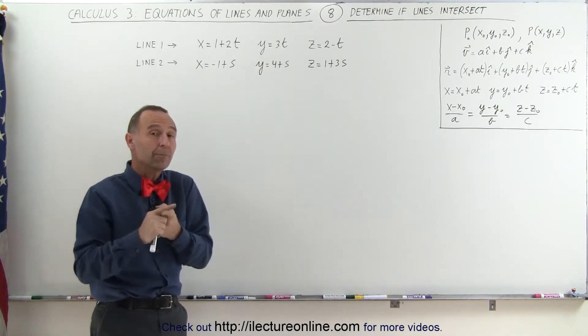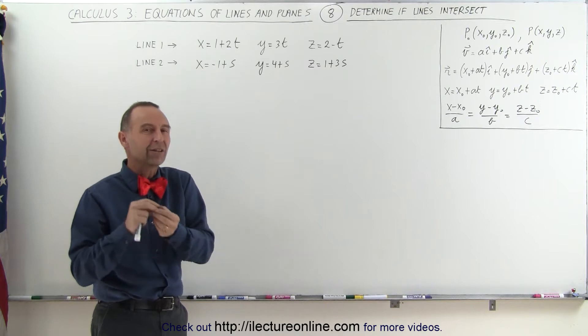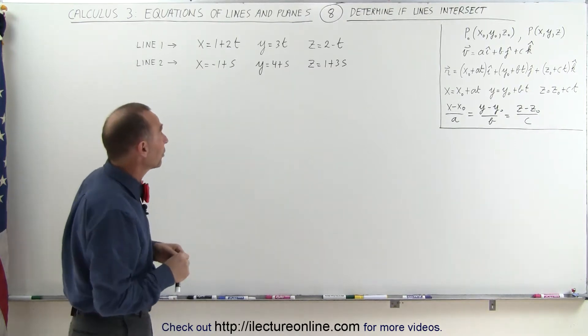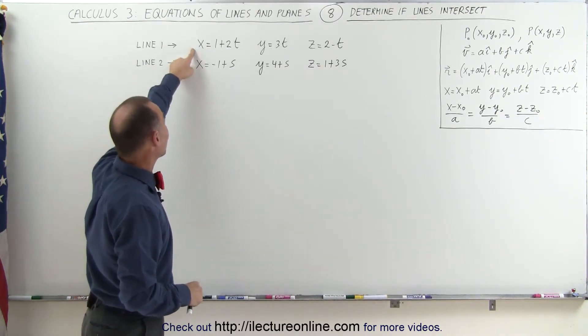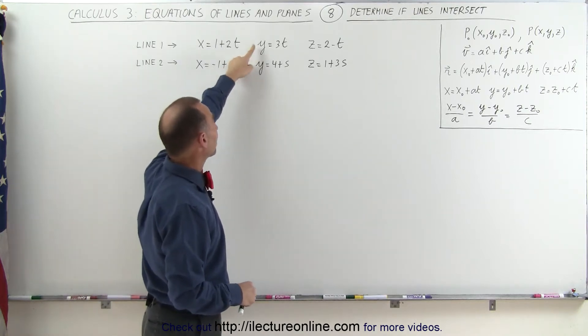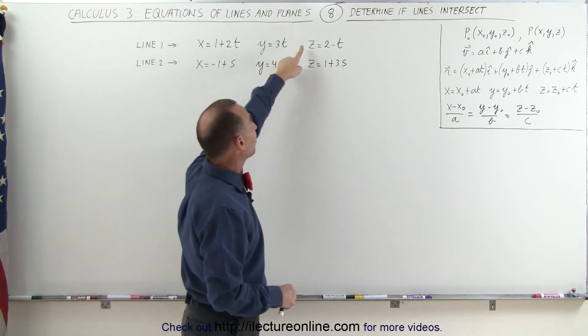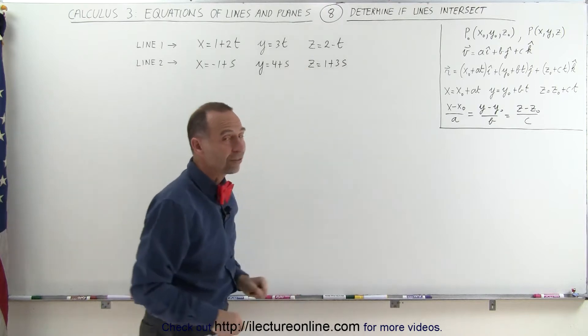Well, if two lines intersect, that means at some point in space, the x, the y, and the z must be equal to one another, which means that the x of the first line equals the x of the second line, the y of the first line equals the y of the second line, and the z of the first line equals the z of the second line.